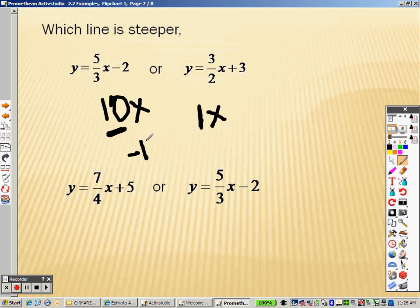By that I mean negative 10 would still have a bigger slope than negative 1, because it's a bigger distance away from 0. So we're talking about the distance from 0. So which one is bigger, 5 thirds or 3 halves?